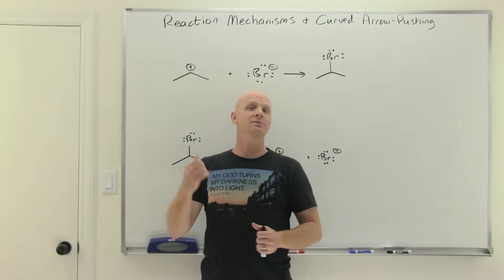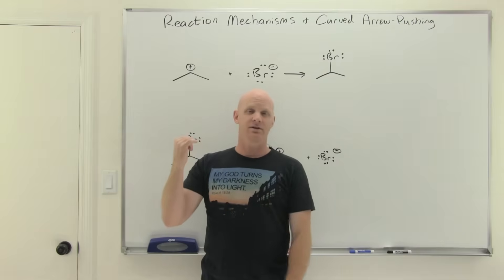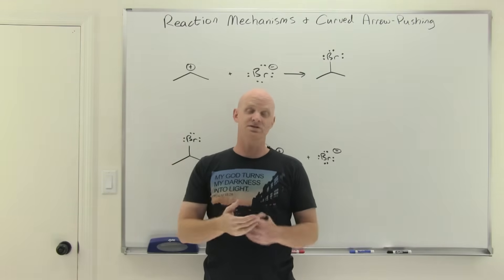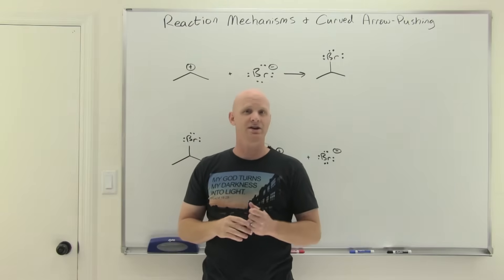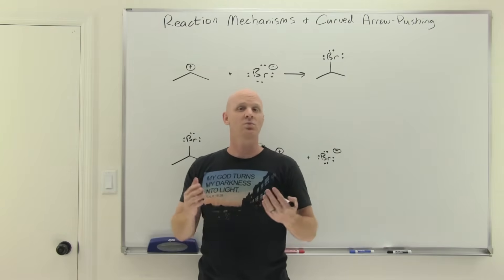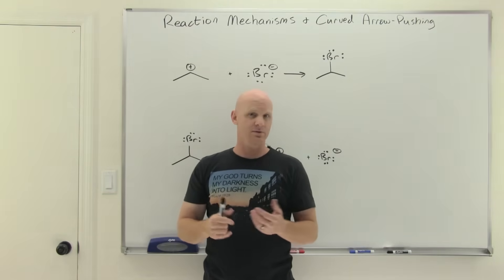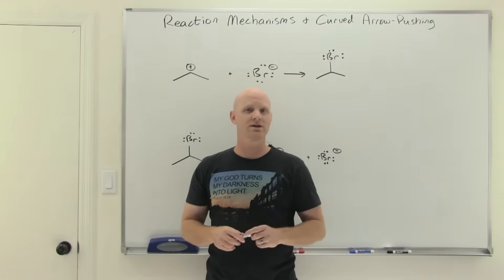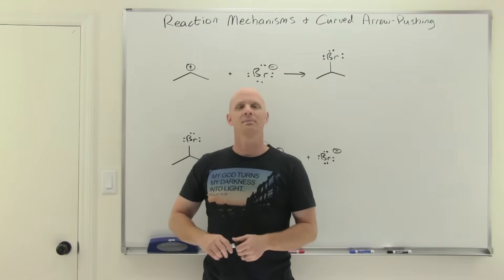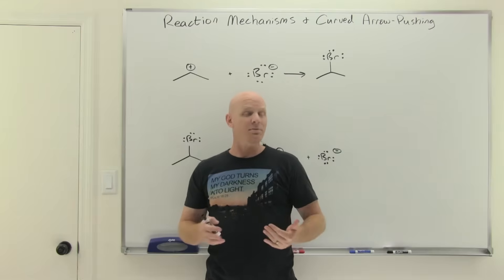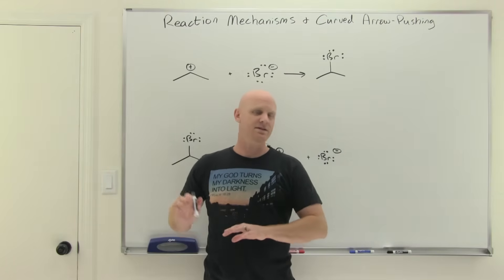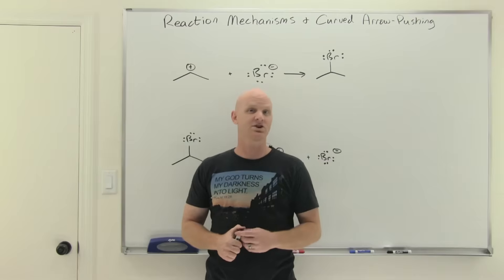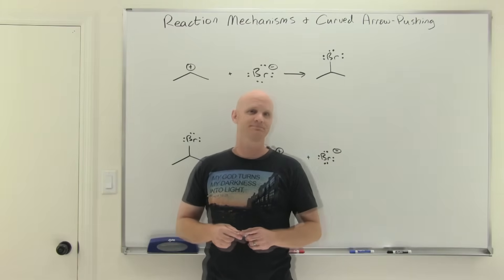Those four types are going to be: nucleophilic attack, loss of a leaving group, proton transfer (which is simply a Bronsted acid-base reaction), and finally a rearrangement — specifically a carbocation rearrangement, which is the most common type you'll see. In first semester, the only type of rearrangement you're likely to see is a carbocation rearrangement.